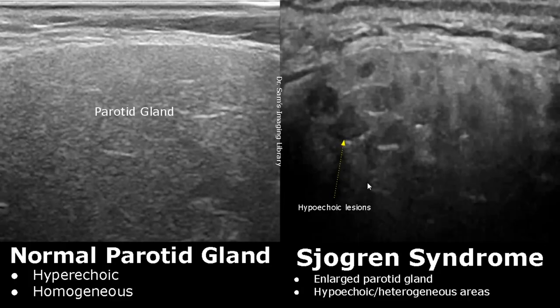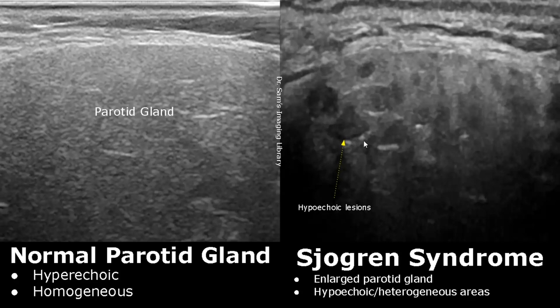Sjogren's syndrome is an autoimmune disorder that affects the salivary glands. This also leads to enlarged salivary glands. In this image, we can see an enlarged parotid gland with hypoechoic and heterogeneous areas.